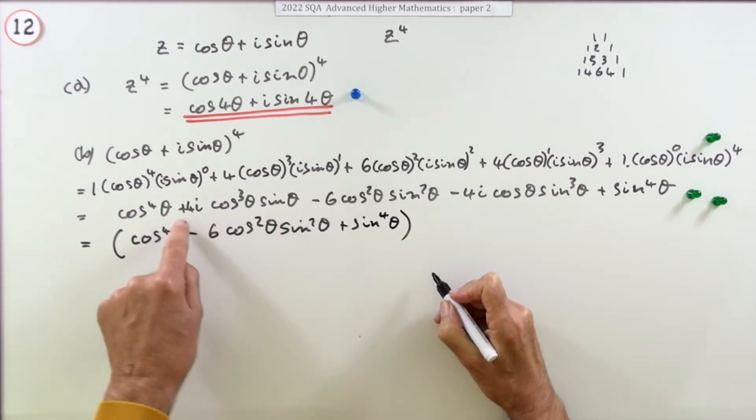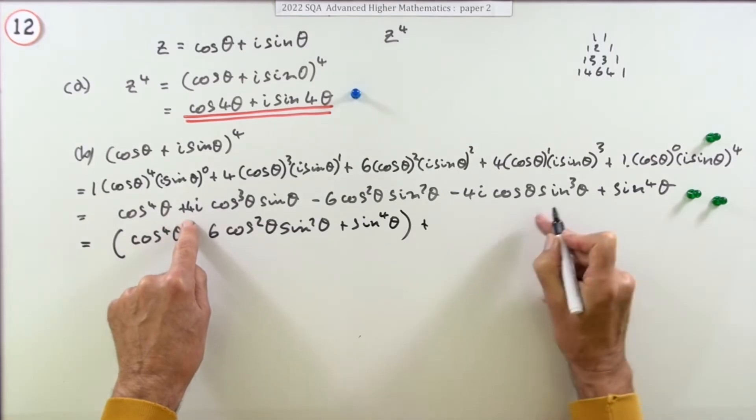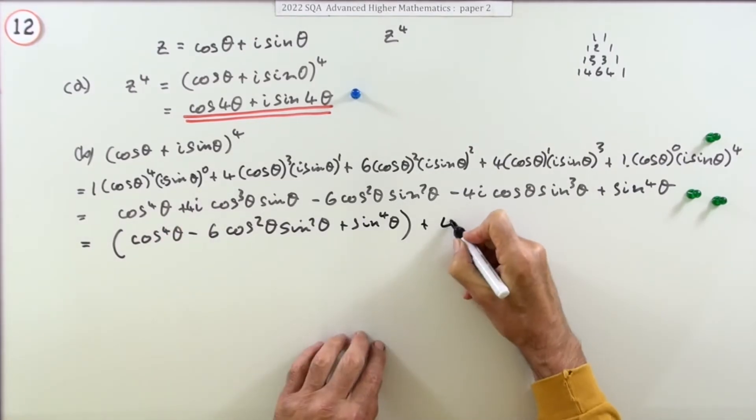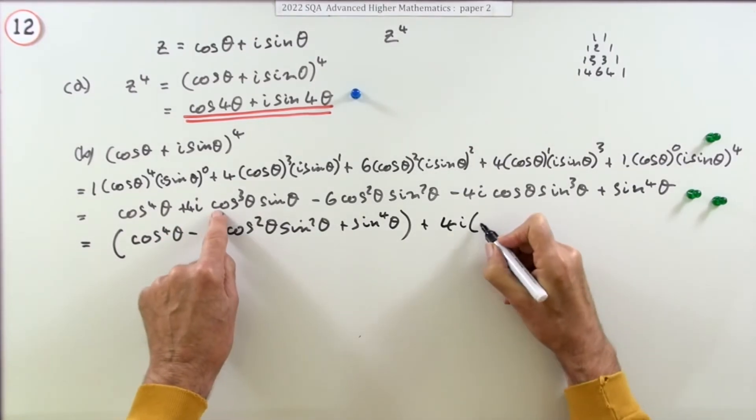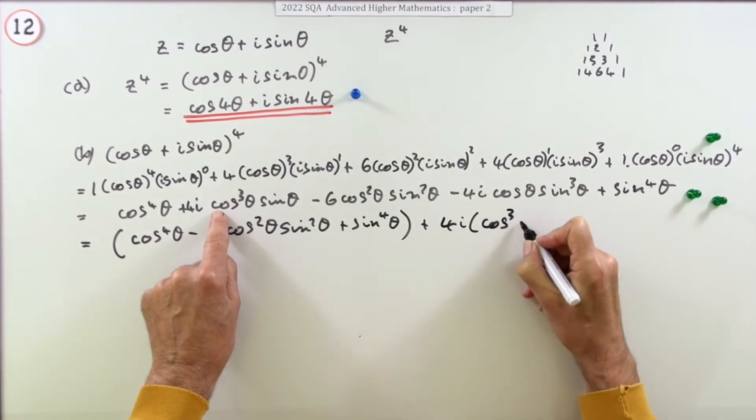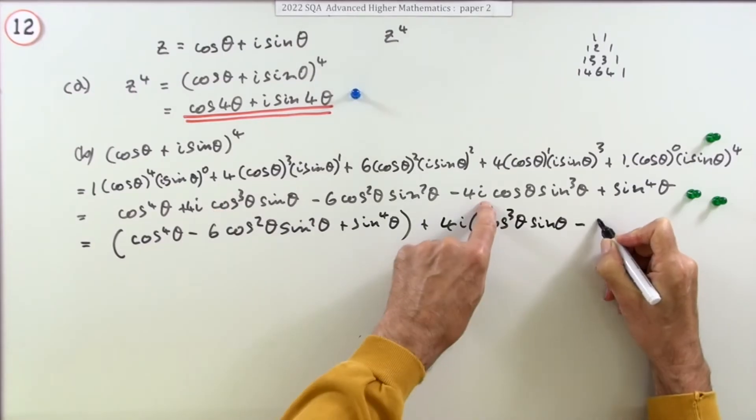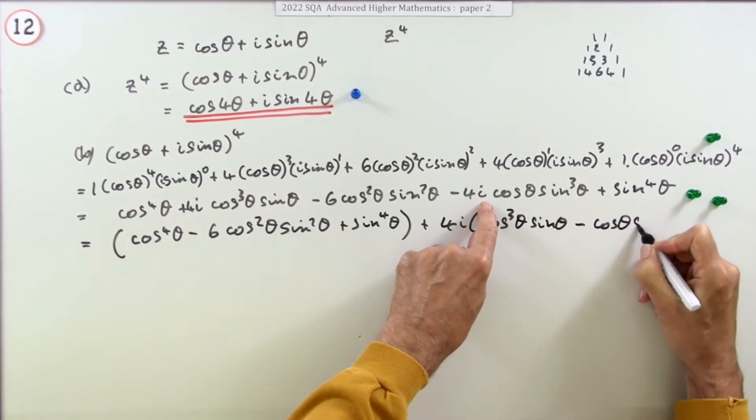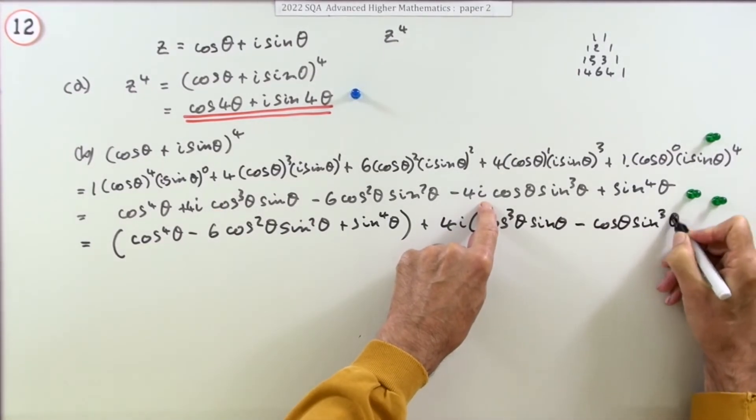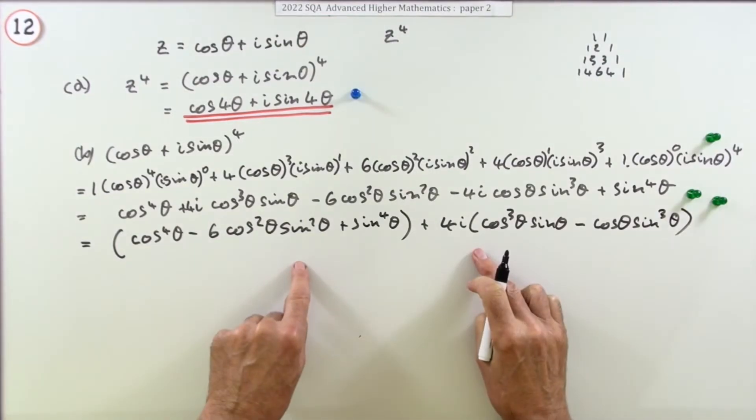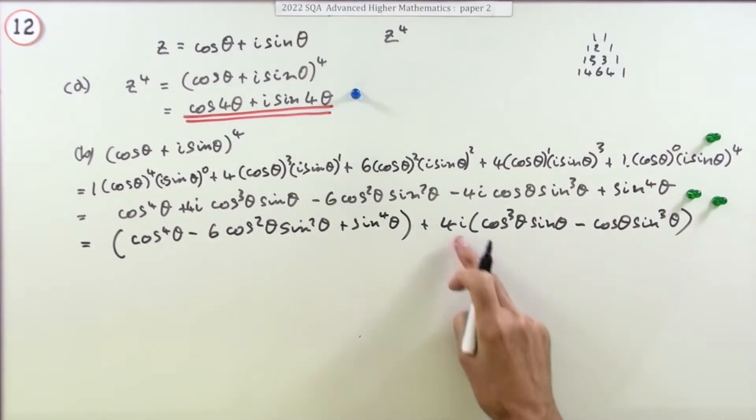And then the imaginary part would be, we've got just put plus and they're both 4i aren't they, so plus 4i times cos cubed theta sine theta minus cos theta sine cubed theta. Now I didn't ask you to do that, I could have left that 4 inside. So it explicitly said i times it, maybe I should have left it inside.